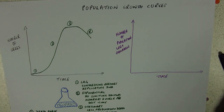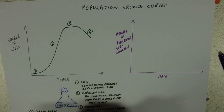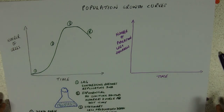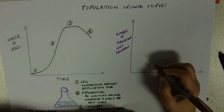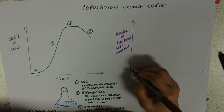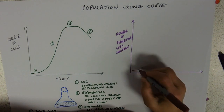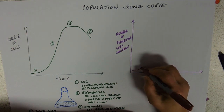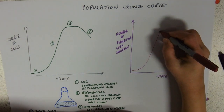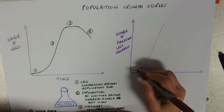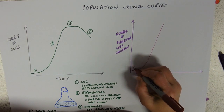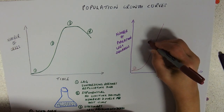If we look at the population growth curve for grey squirrels: a Victorian brings over a pair, sticks them in his garden, they have their litter of babies, and the population is still quite low. Those babies have babies and so forth, and the population goes up and up — exponential. So here again we've got that lag phase and then the exponential phase.